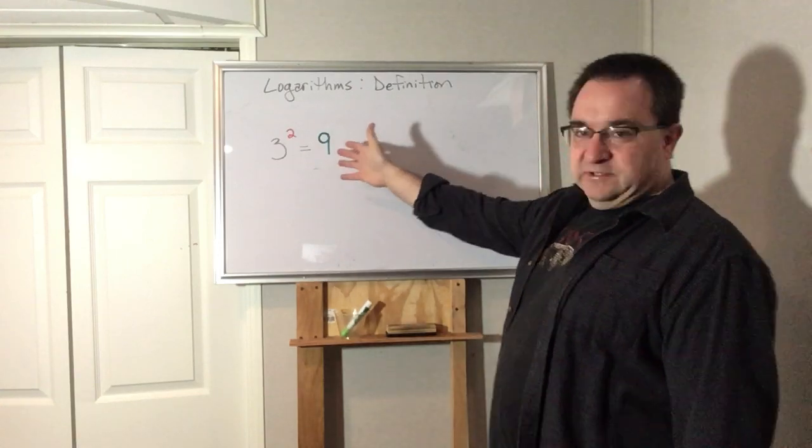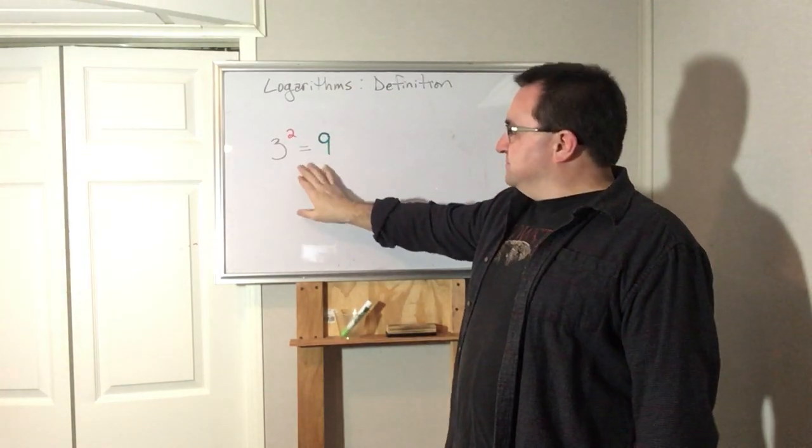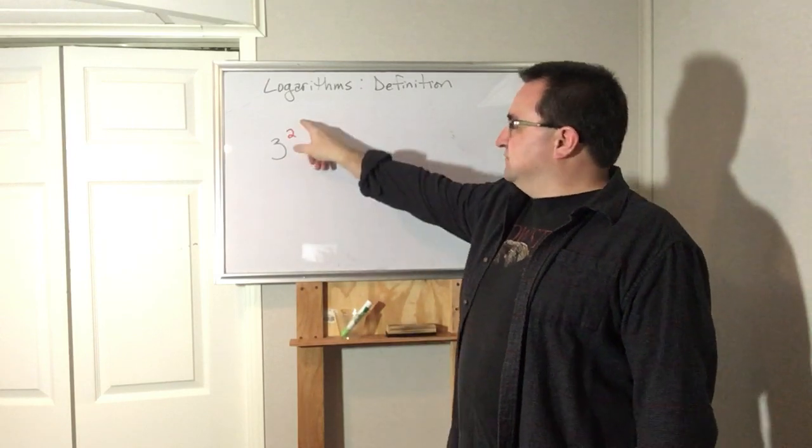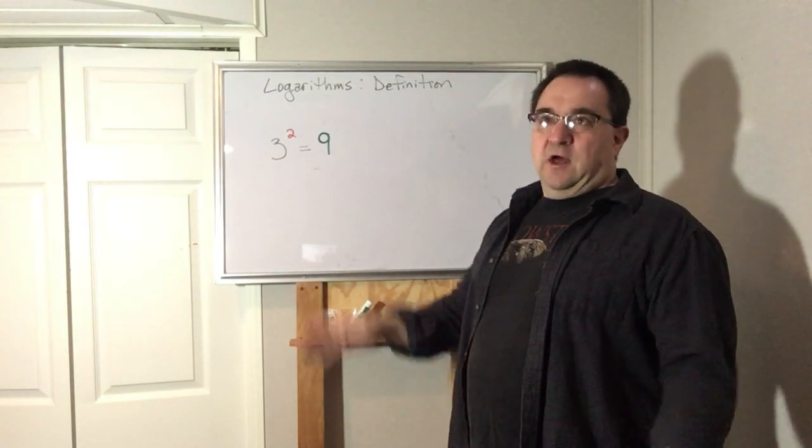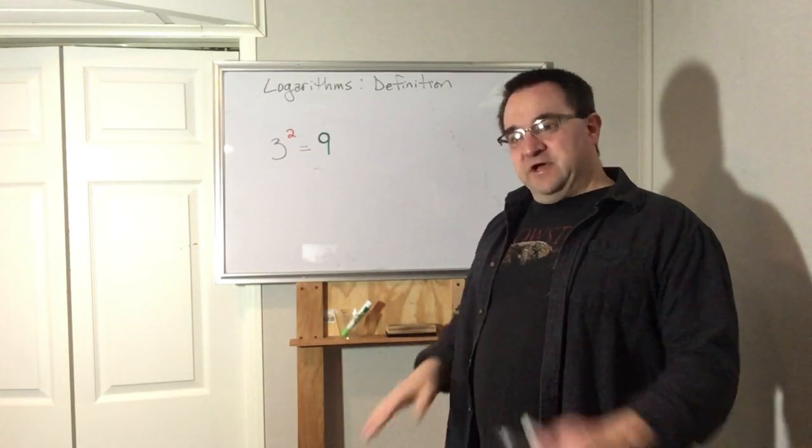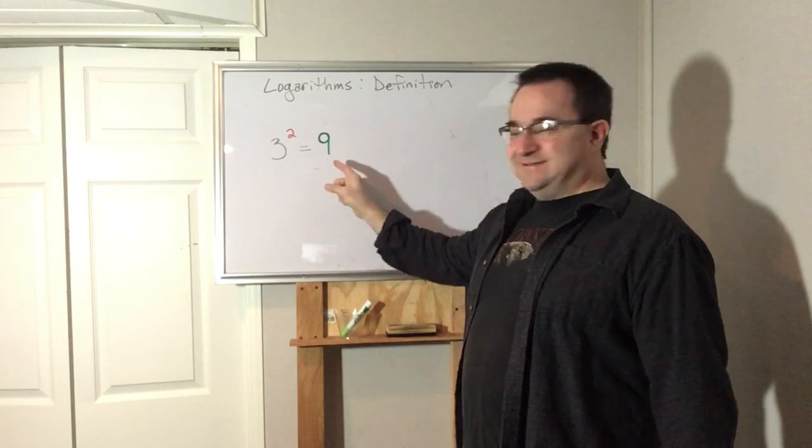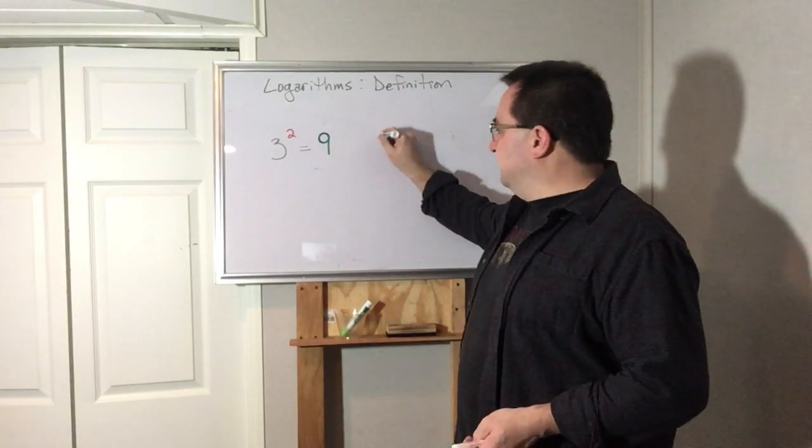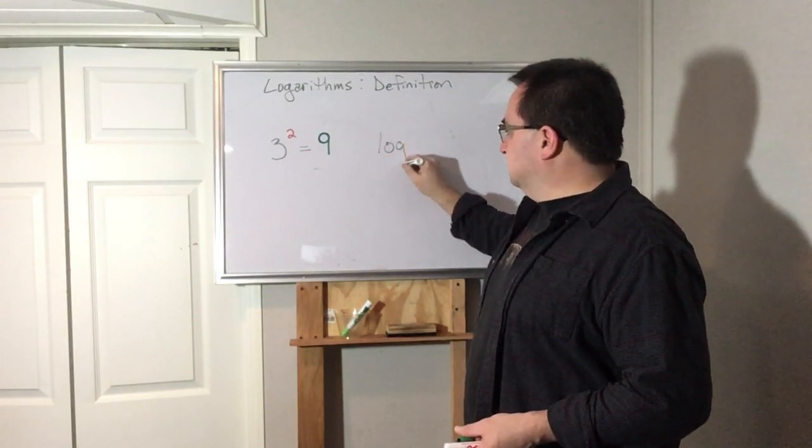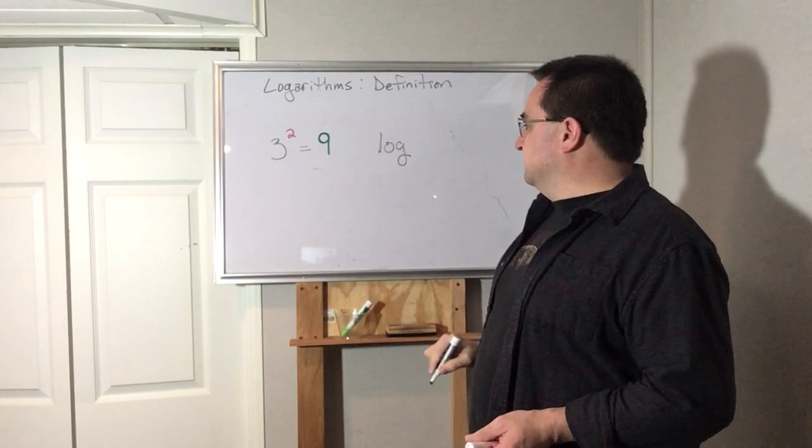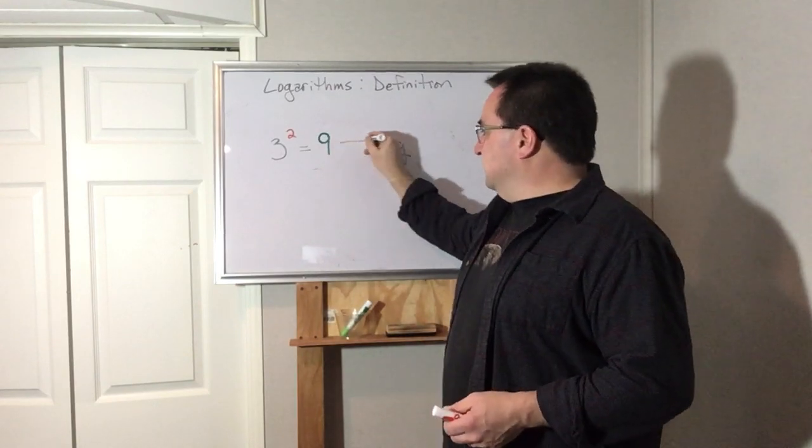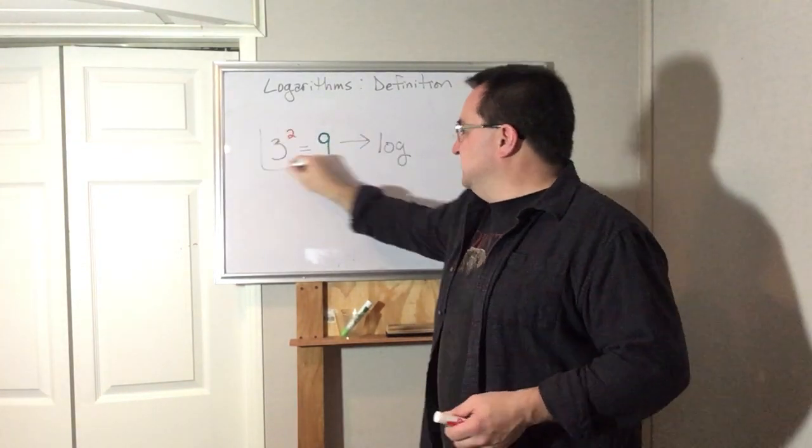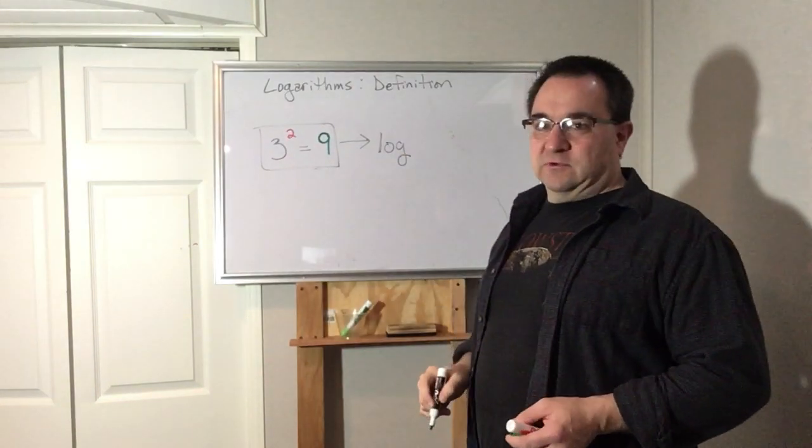So let's start with something that's familiar. This is an exponential equation: 3 squared equals 9. A logarithm is nothing more than that statement rewritten in a different sequence. The word log comes in there.